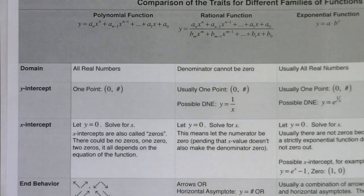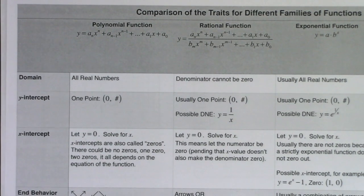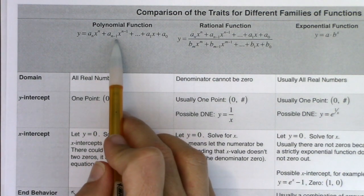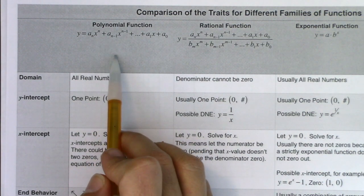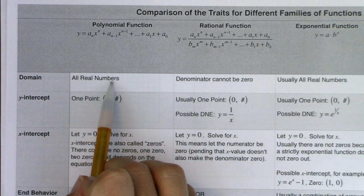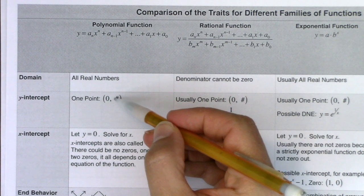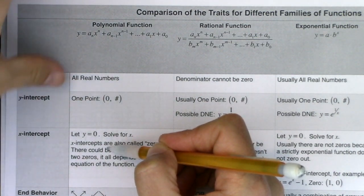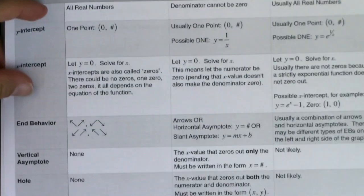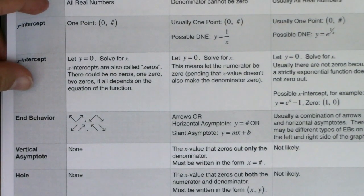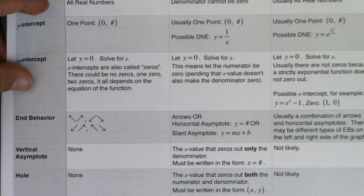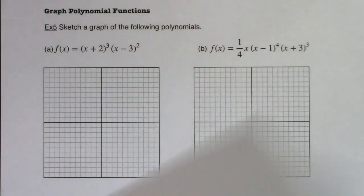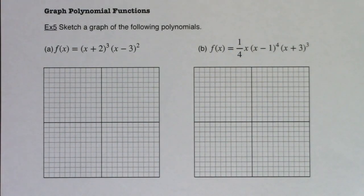We'll start talking about traits that are interesting to us, and I really want to focus in on the x and y intercepts and their multiplicities. So the first thing I want to talk about, and I want to refer to that trait table that you could print out, is that our domain is always going to be all real numbers.